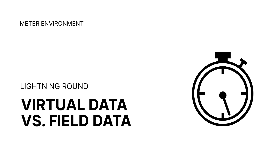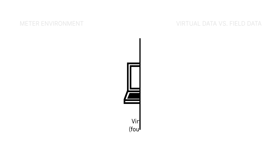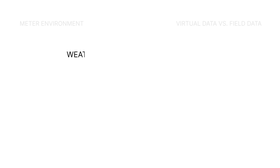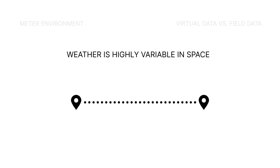Did you know there's a big difference between virtual data and infield data? Relying on virtual data to generate critical crop and pest development models can cause huge errors. This is because weather is highly variable in space. For example, when we measured air temperature in our field at two separate points, we found a difference of 6 degrees Celsius, and these sites were only 220 meters apart.